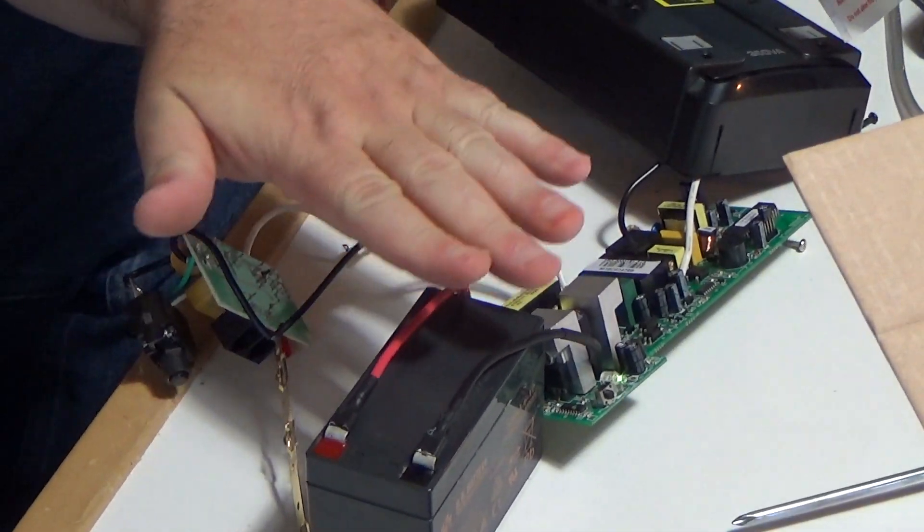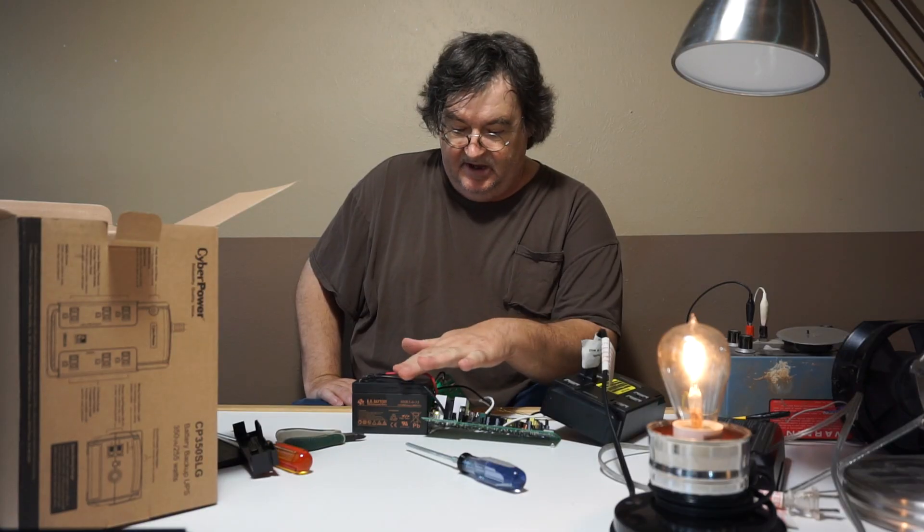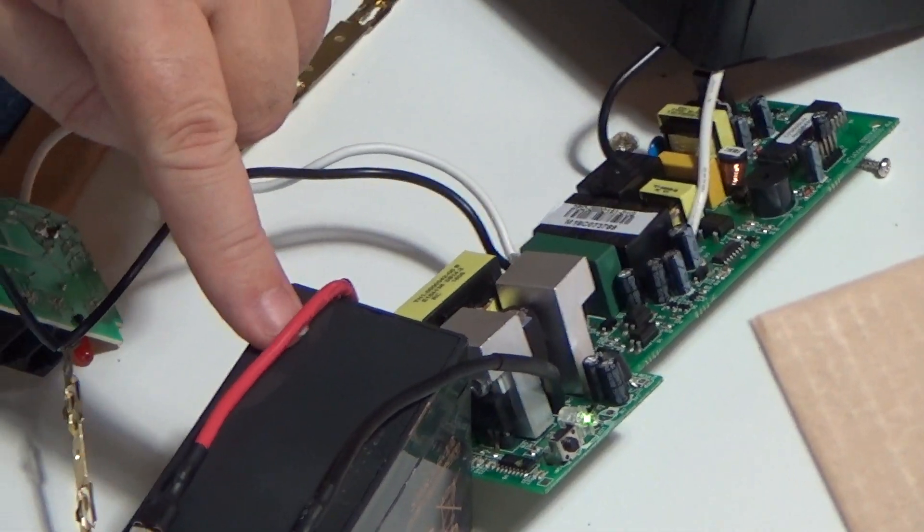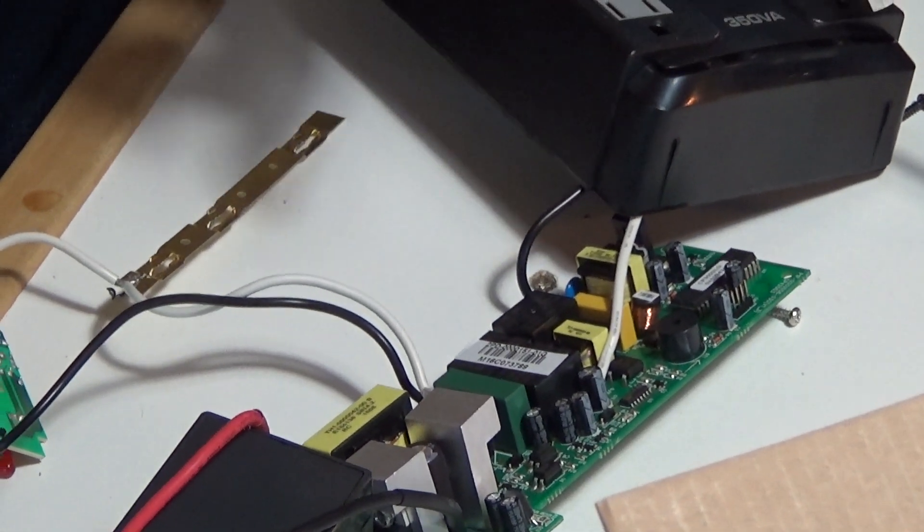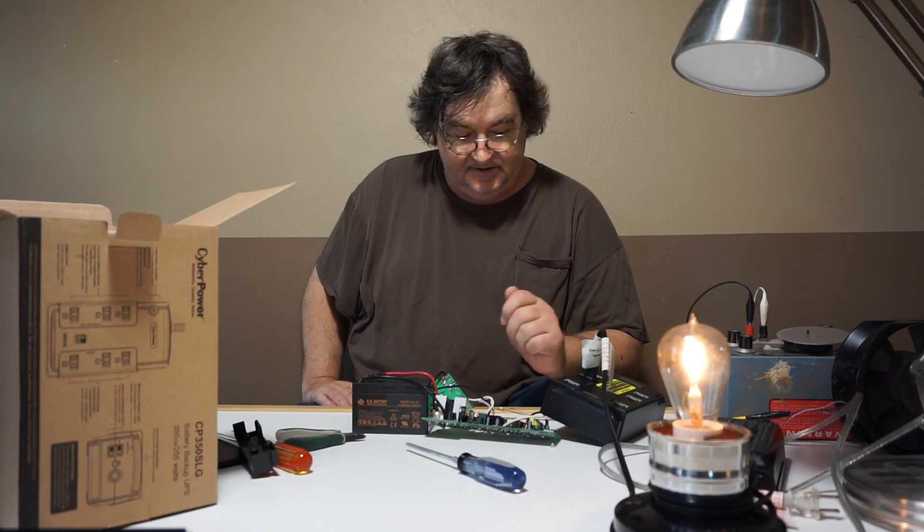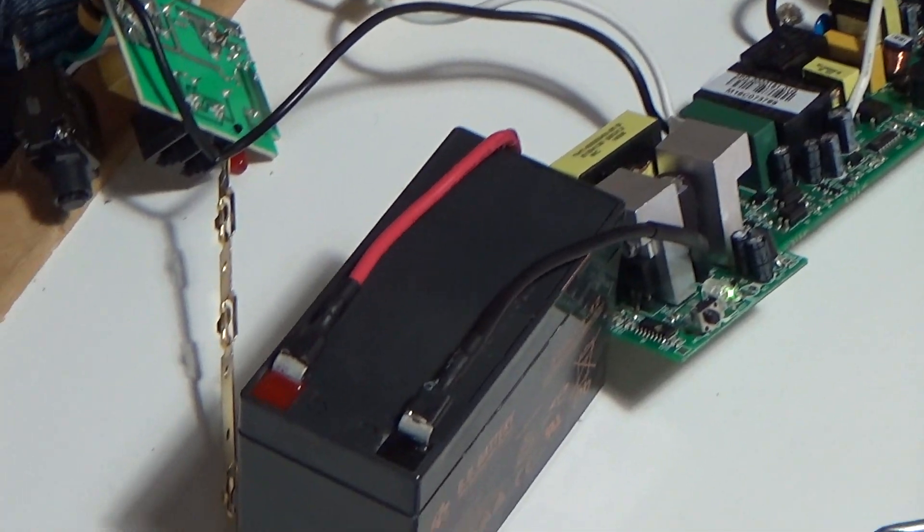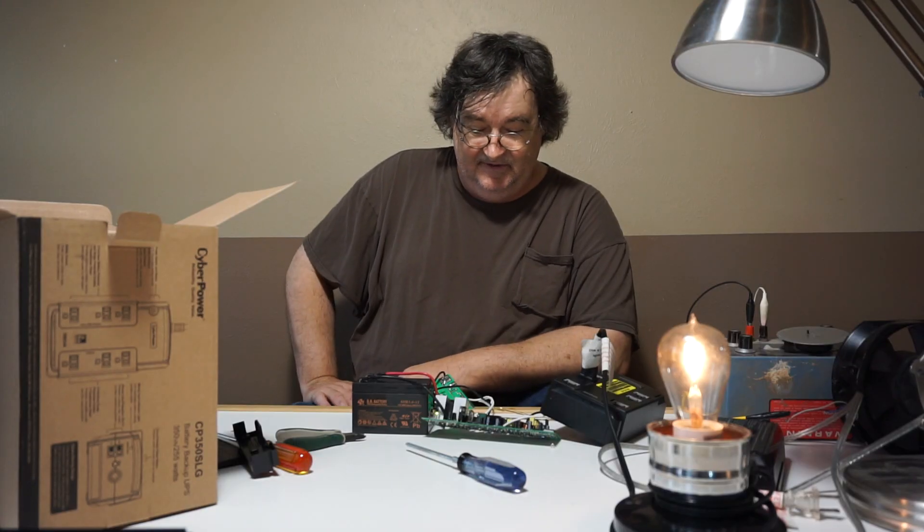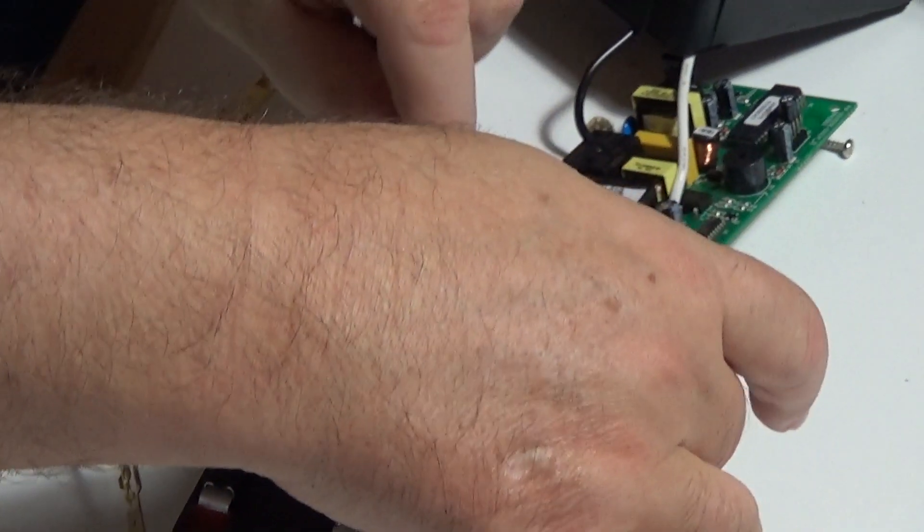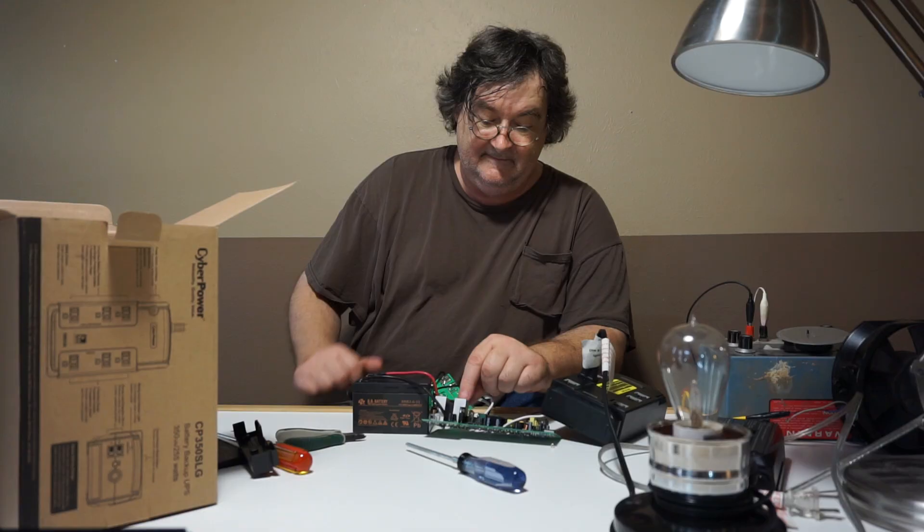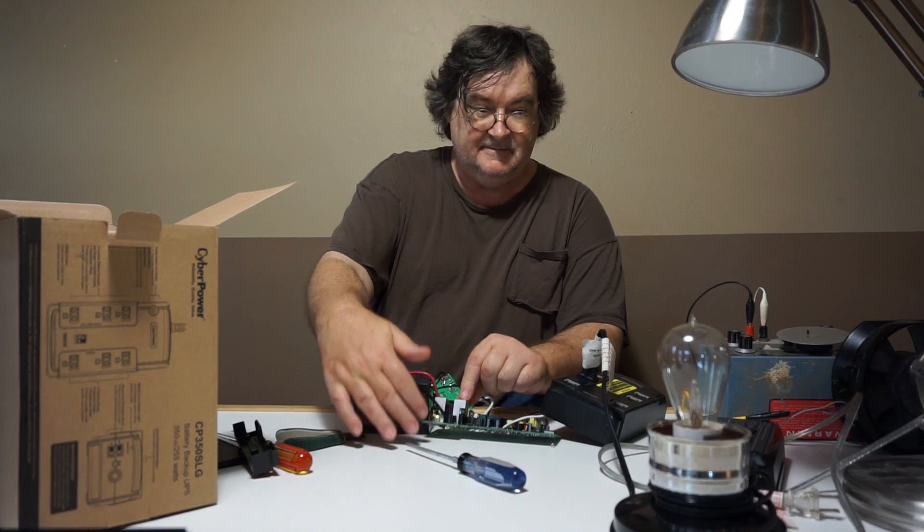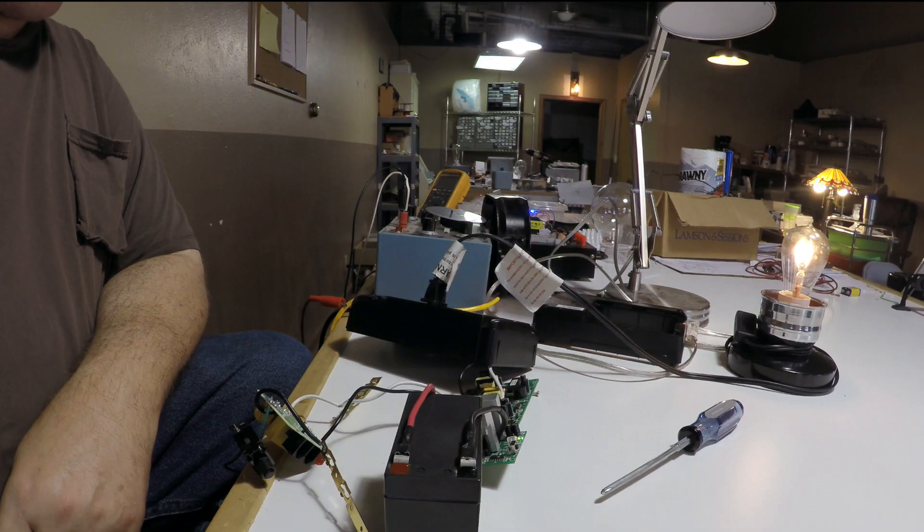So we got this thing running now just simply on battery power alone. As you can see, the battery is supplying the energy to the board here, which is converting the 12 volt to 120 volt, which is running our little light bulb. It's letting you know the status of the circuit that it is in fact running, and it's telling you that it is on standby power. So if we go ahead and remove the power, it shuts it down. We'll go ahead and start it up again.